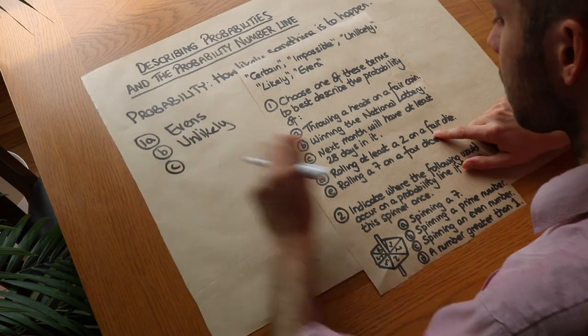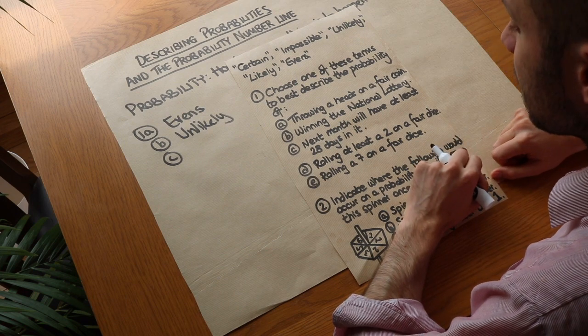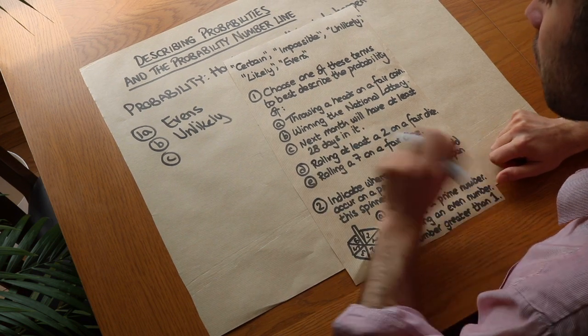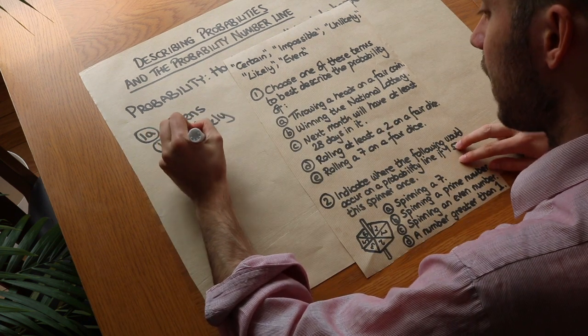What about C? Next month will have at least 28 days in it. Well that's absolutely certain. Every month of the year has at least 28 days in it. So we say that is certain.